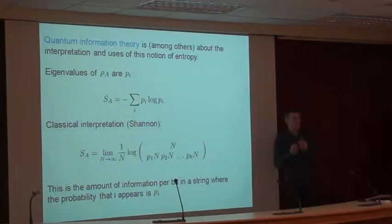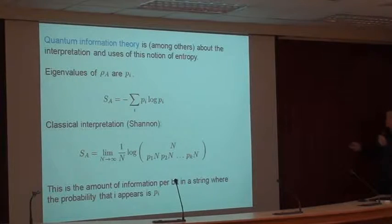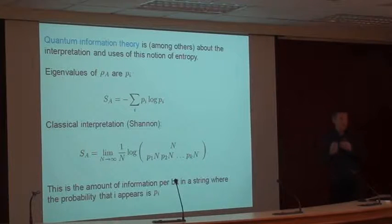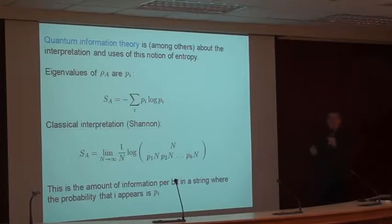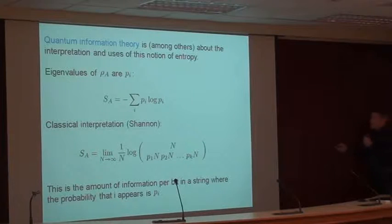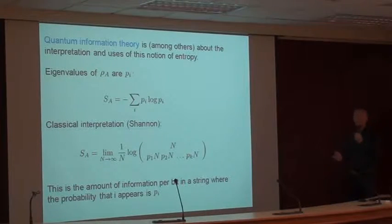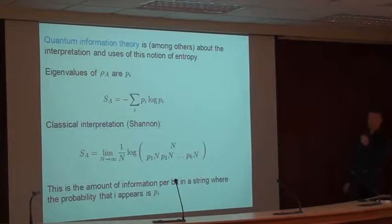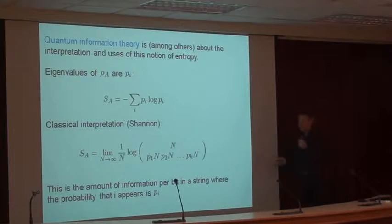Entanglement entropy is part of the field called quantum information theory, which develops notions of entropy for quantum systems and tells us how to interpret and use them. In quantum information theory, the most important applications involve quantum computing, quantum algorithms, and complexity. The interpretation of entanglement entropy dates back to classical information theory, because written in terms of eigenvalues p_i, it becomes minus sum p_i log p_i — an expression invented decades ago by Shannon in a seminal paper on classical information theory.